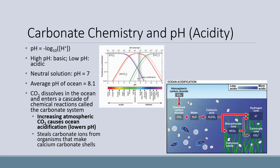Having less carbonate ions available — because they're all now bicarbonate — makes it very difficult for organisms that make calcium carbonate shells or skeletons. So higher CO2 in the atmosphere reduces the availability of a key ingredient in shells in the ocean. If conditions get extremely acidic, existing calcium carbonate shells and corals, which have calcium carbonate skeletons, will actually dissolve as well.